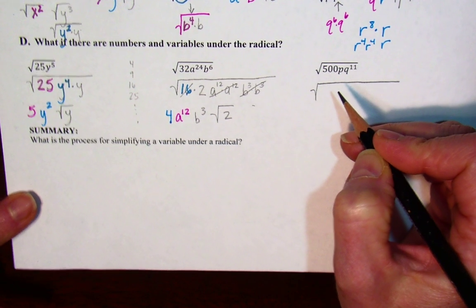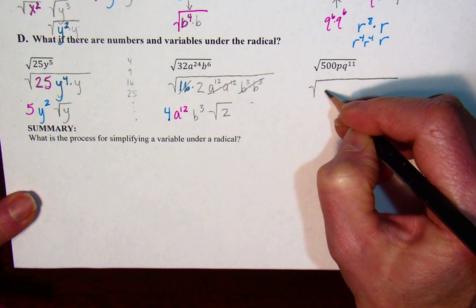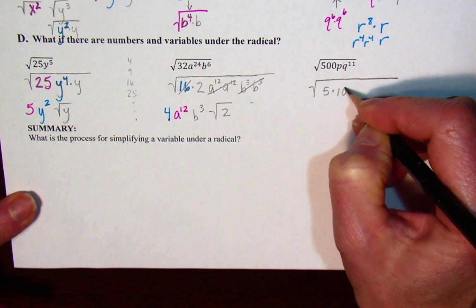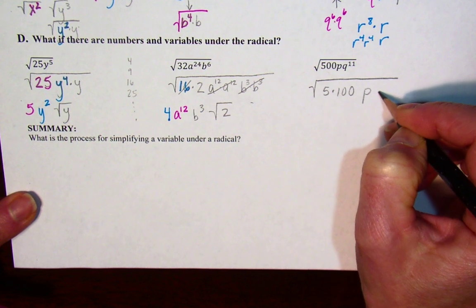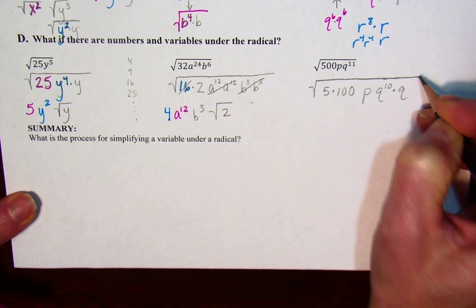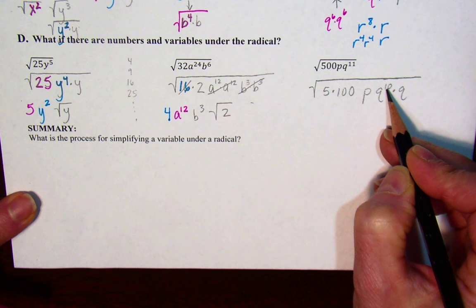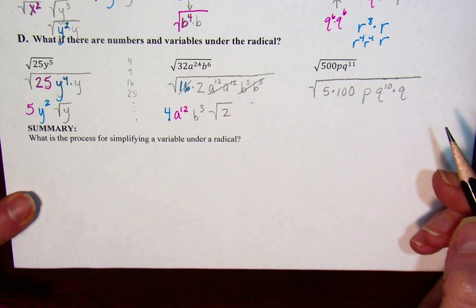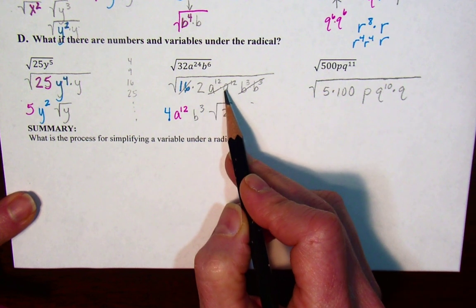One more try. What is the biggest perfect square that is a factor of 500? That's 5 times 100. Then we have p, q to the 11th is q to the 10th times q. Now I could split this up into q to the fifth times q to the fifth for instructional purposes, but if you know it's an even numbered exponent, it's okay to do it like this.